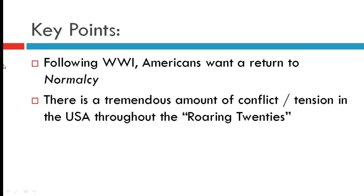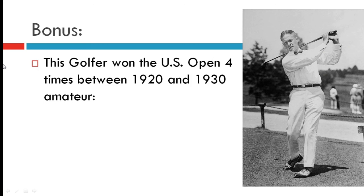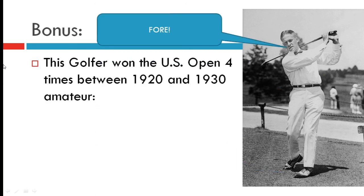To get back to the key points: following World War I, America wanted a return to normalcy, and there was a great deal of conflict and tension throughout the Roaring 20s. A good short-answer question would ask you to define what normalcy meant in 1920s America, explain one or two examples of challenges to that normalcy, and discuss the reaction to those challenges. As a bonus question: this golfer won the U.S. Open four times between 1920 and 1930 as an amateur — first person to tell me his name tomorrow gets a bonus point on the upcoming quiz. That's it for today, chapter 12 part one. Thanks for watching.